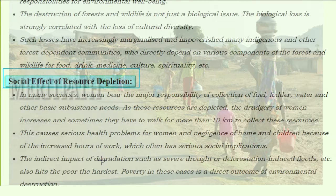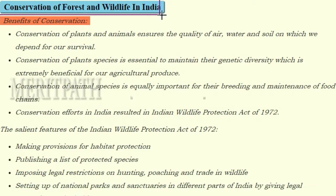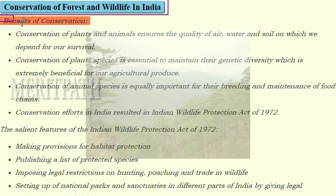This causes serious health problems for women and neglect of home and children due to increased hours of work, which often has serious social implications. The indirect impacts of degradation, such as severe drought or deforestation-induced floods, also hit the poor the hardest — poverty in these cases is a direct outcome of environmental destruction. Let's now look at conservation of forests and wildlife in India.